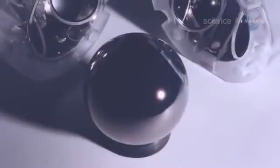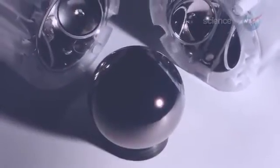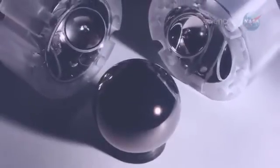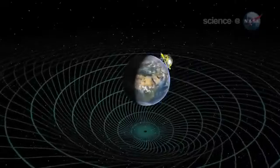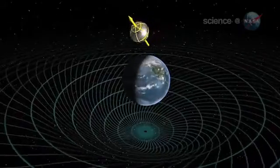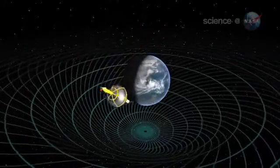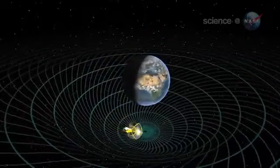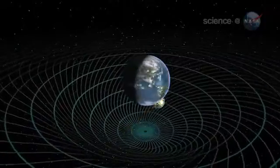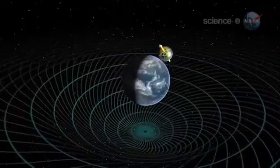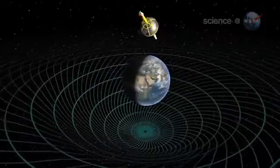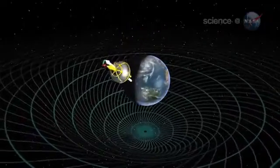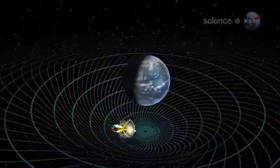Gravity Probe B carried some super-spherical gyros into Earth's orbit to see what they would do. In practice, this simple idea is extremely difficult. According to calculations, the twisted spacetime around Earth should cause the axis of the gyros to drift by a tiny amount. Really tiny. It's like measuring the thickness of a sheet of paper held edge-on 100 miles away.